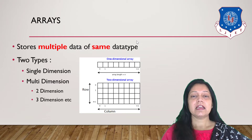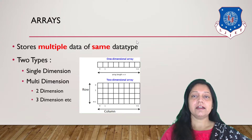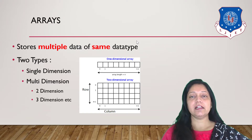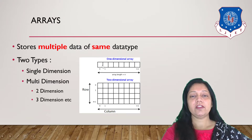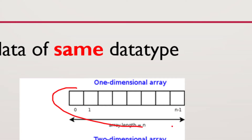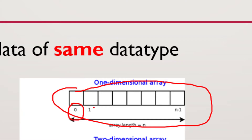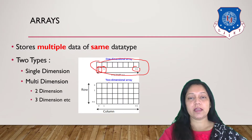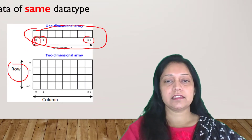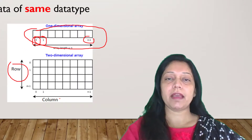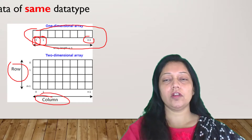In single dimension arrays, the values are arranged either row-wise or column-wise — there is a single row to store different values. As you can see, there are n values stored in a single dimension array. The first value is stored at index 0, the second at index 1, and the last at index n-1. In two-dimensional arrays, the values can be considered as stored in a matrix format with rows and columns.